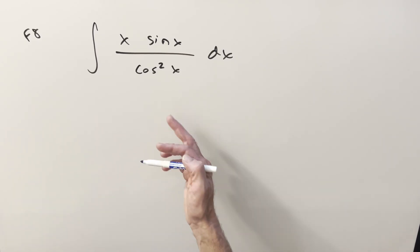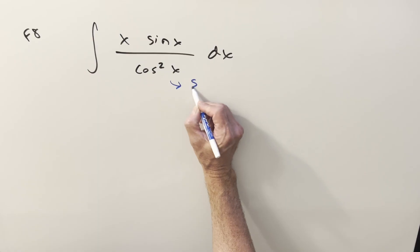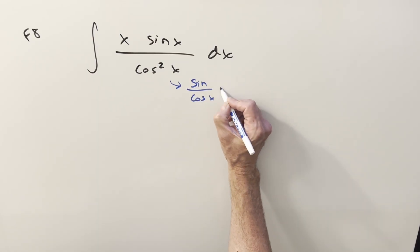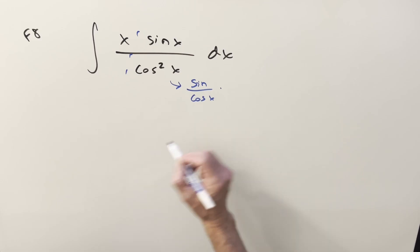I mean, I guess we could leave it in terms of sines and cosines, but what I want to do instead is break it up like sine over cosine times, just leaving the x off right now.